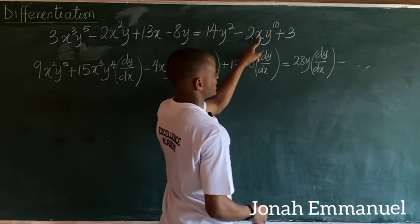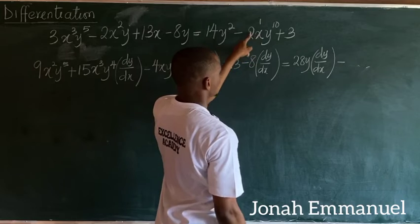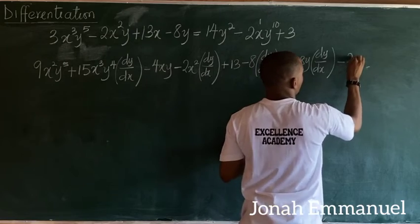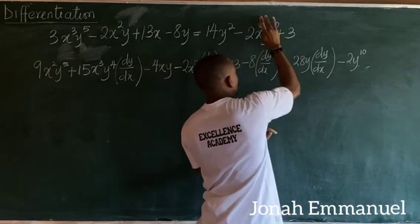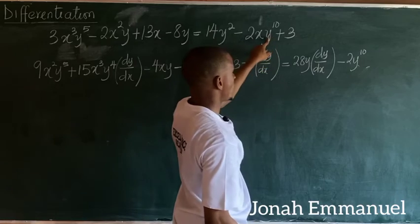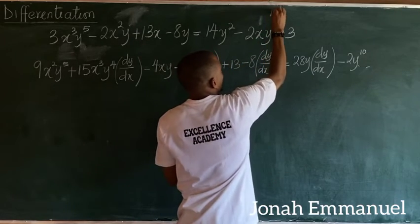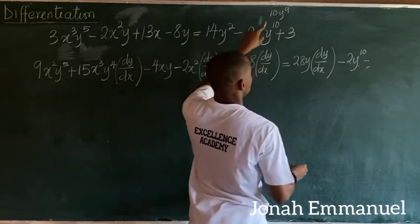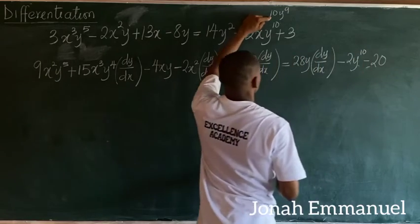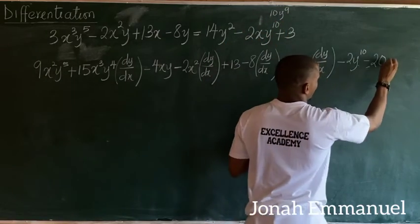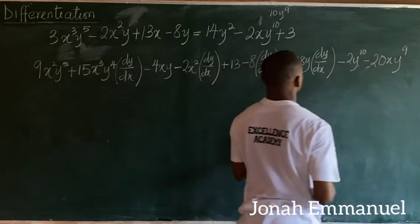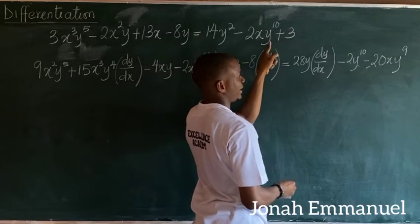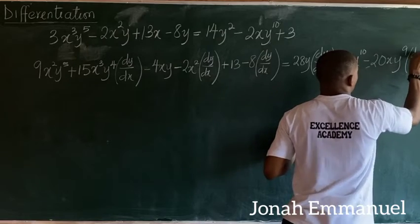Differentiating x in the term 2xy¹⁰ gives 1, so that becomes 2y¹⁰. Differentiating y¹⁰ gives 10y⁹, so 2 times 10 is 20, making that term 20xy⁹ dy/dx. Differentiating the constant 3 gives 0.